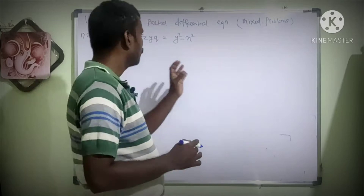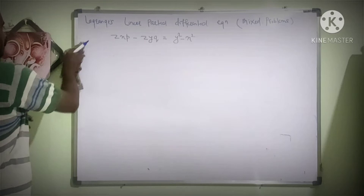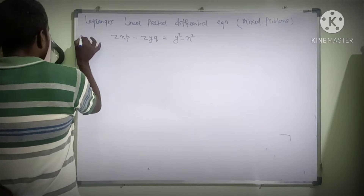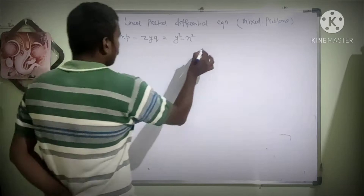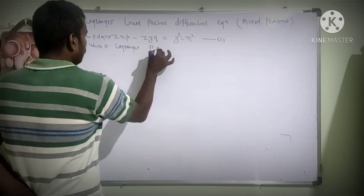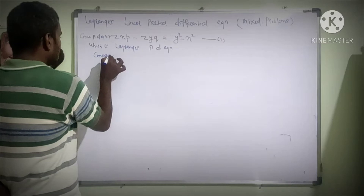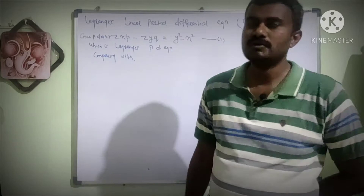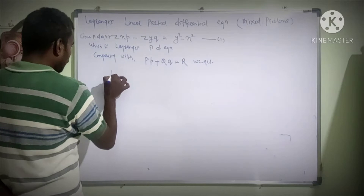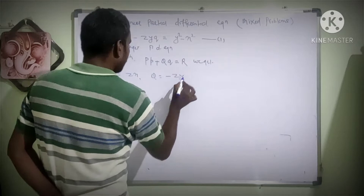The first thing we have to do is identify this as Lagrange's equation. If you observe this equation, it is in the form Pp plus Qq equal to R — that is, Lagrange's linear partial differential equation. So comparing with the general form Pp plus Qq equal to R, we get: P equal to zx, Q equal to minus zy, and R equal to y square minus x square.